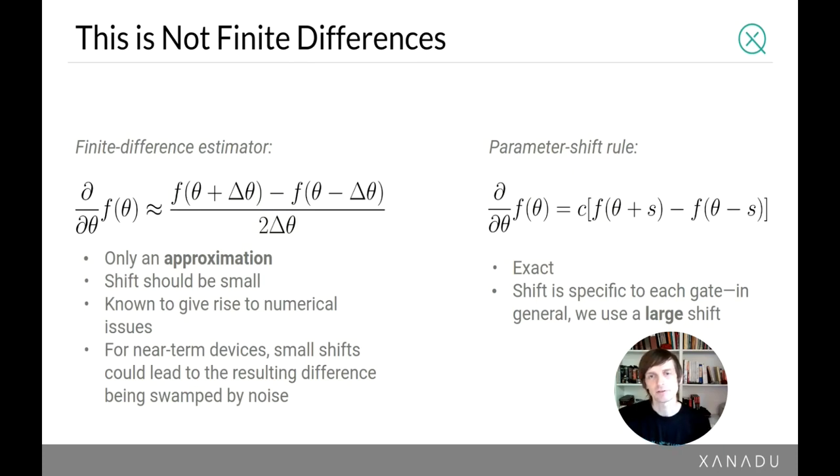Now, this looks very, very similar to another formula, which is the finite difference formula. And I want to point out that these are not quite the same thing. So in particular, the finite difference estimator is an approximation, it's not an exact formula. So you have a forward shift and a minus shift, but that shift is by a very, very small number delta theta. And the reason it should be small is because if it's larger, then you're not getting a very good approximation to that tangent curve. So you need it to be small to get a good approximation.